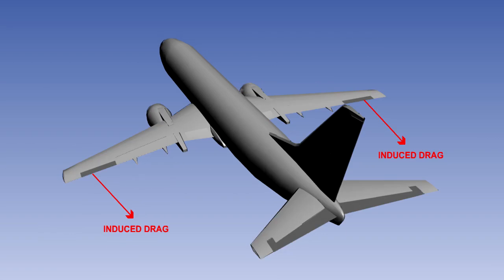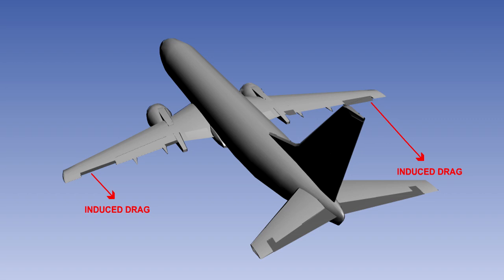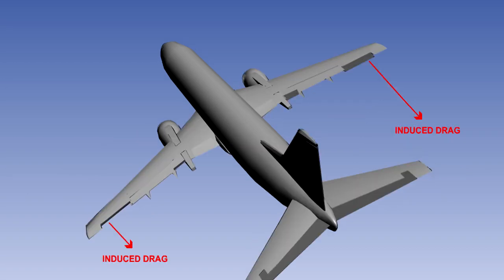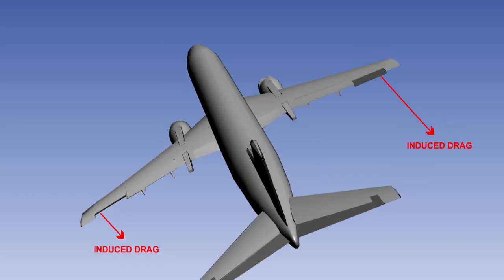An undesirable side effect of the use of ailerons is adverse aileron yaw. The increased lift on the up-going wing gives an increase in the induced drag, whereas the reduced lift on the down-going wing gives a decrease in induced drag. The difference in drag on the two wings produces a yawing moment, which is opposite to the rolling moment.